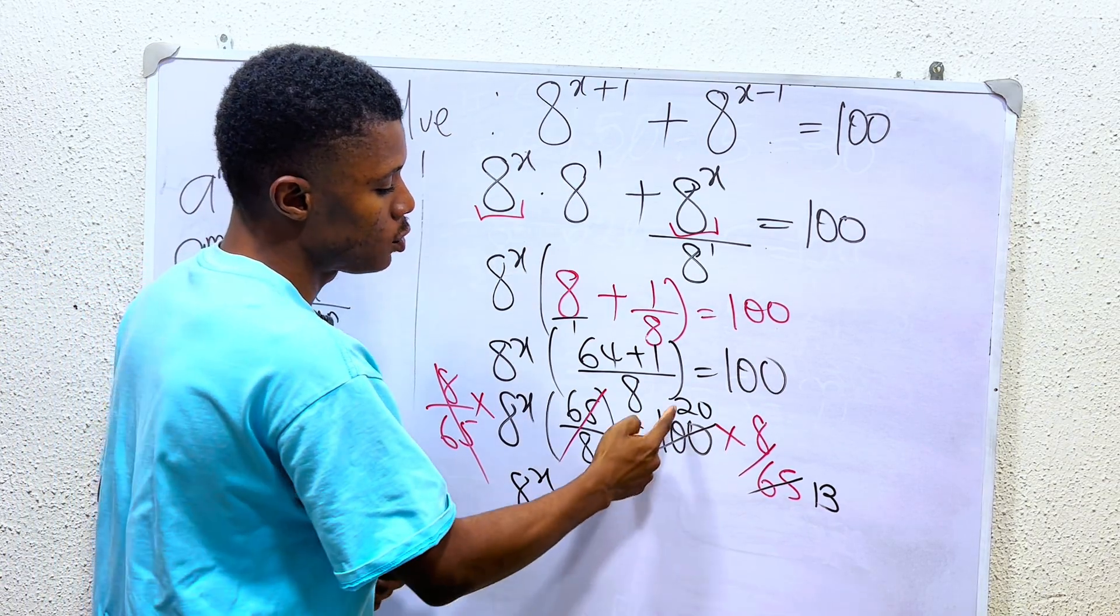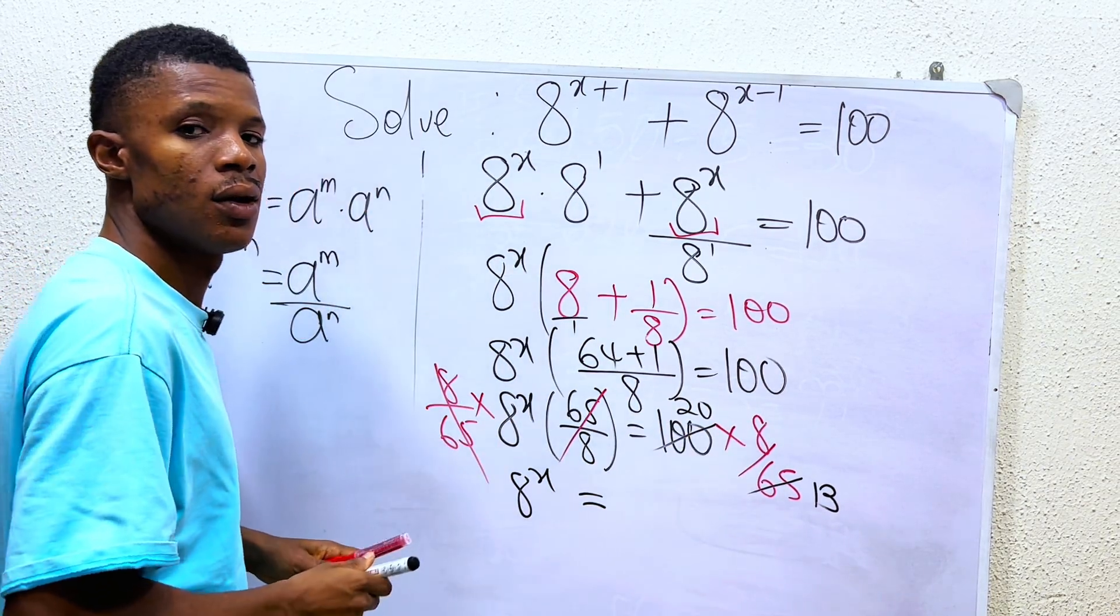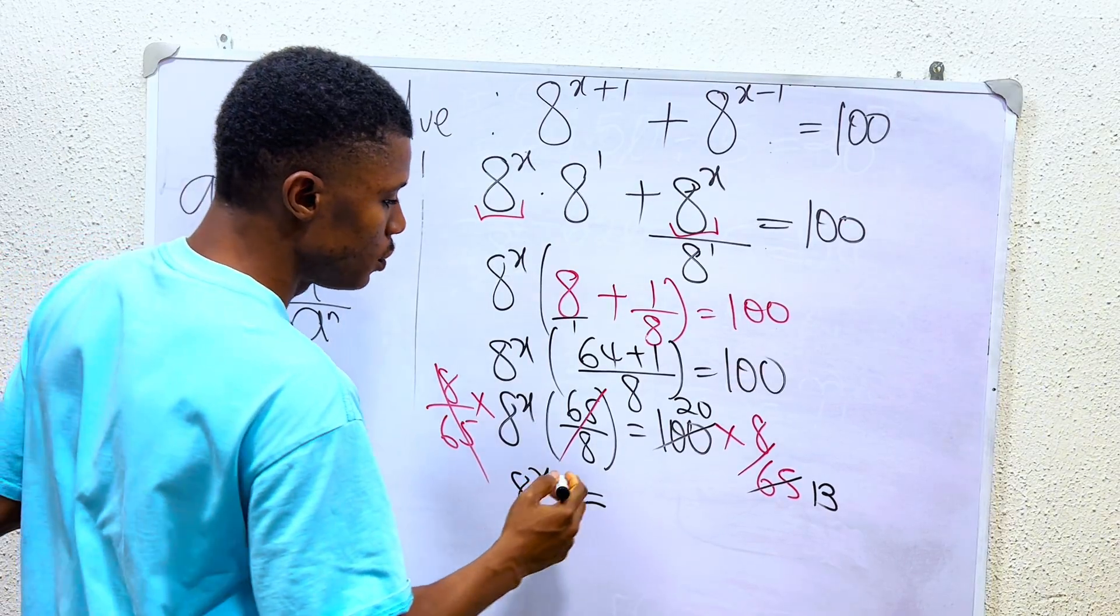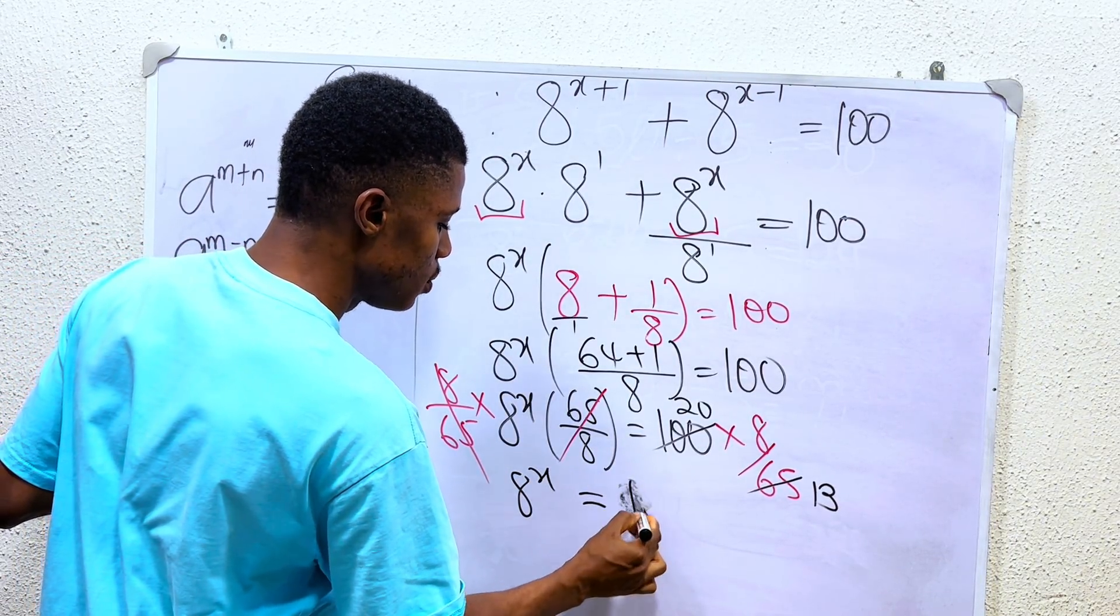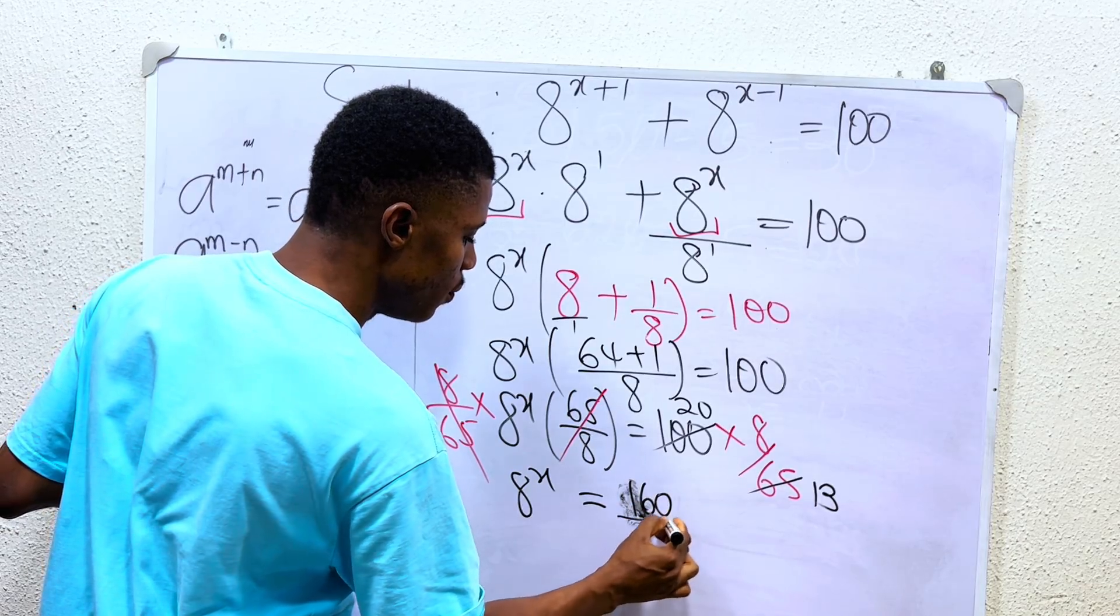We have it that 8 power of x is 20 times 8. So I have 20 times 8 is 160, which is 160 over 13.